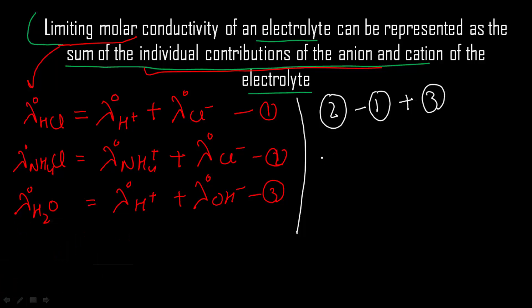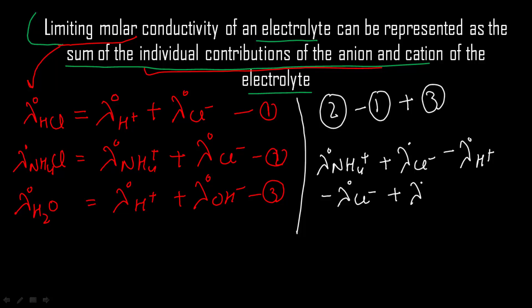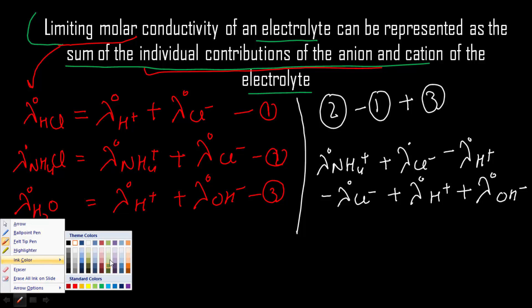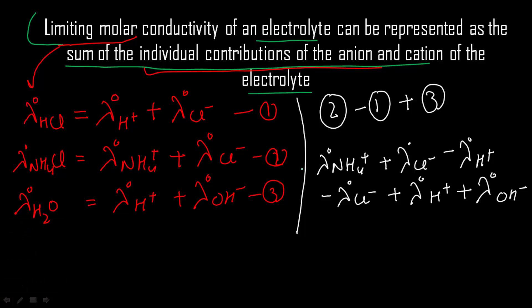What I get is: limiting molar conductivity of NH₄⁺ plus limiting molar conductivity of Cl⁻ minus limiting molar conductivity of H⁺ minus limiting molar conductivity of Cl⁻ plus limiting molar conductivity of H⁺ plus limiting molar conductivity of OH⁻. The chlorine part gets cancelled out and similarly the proton parts also cancel out.